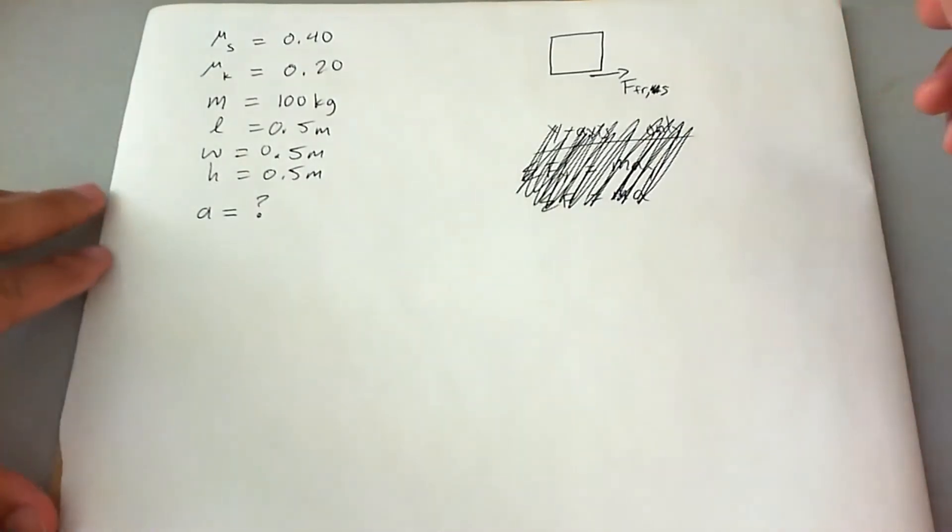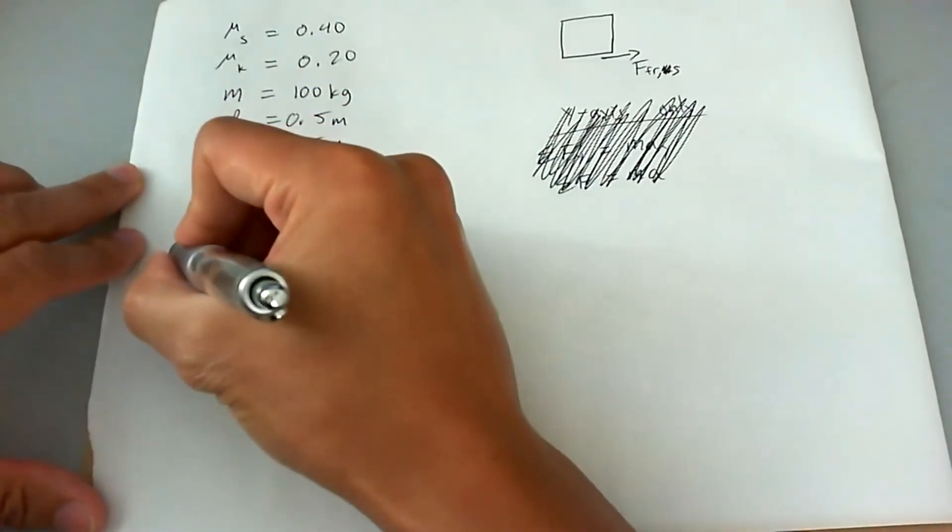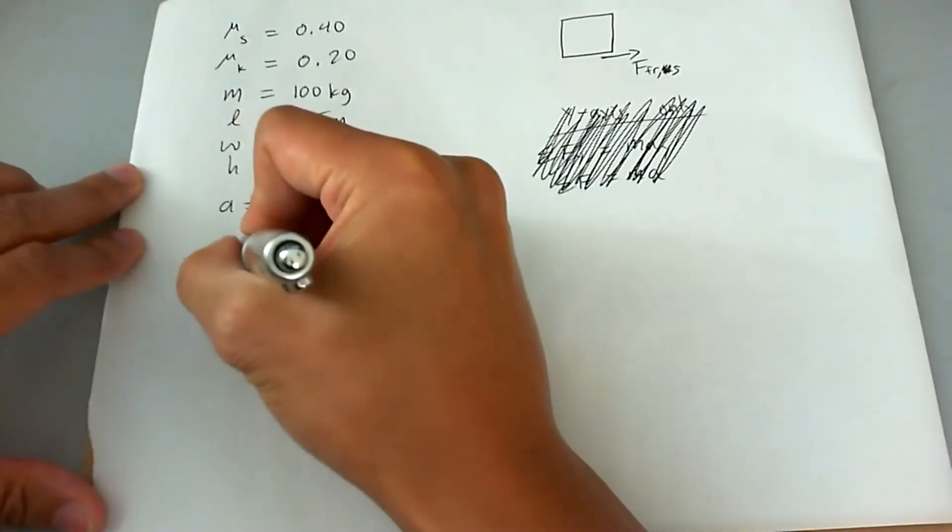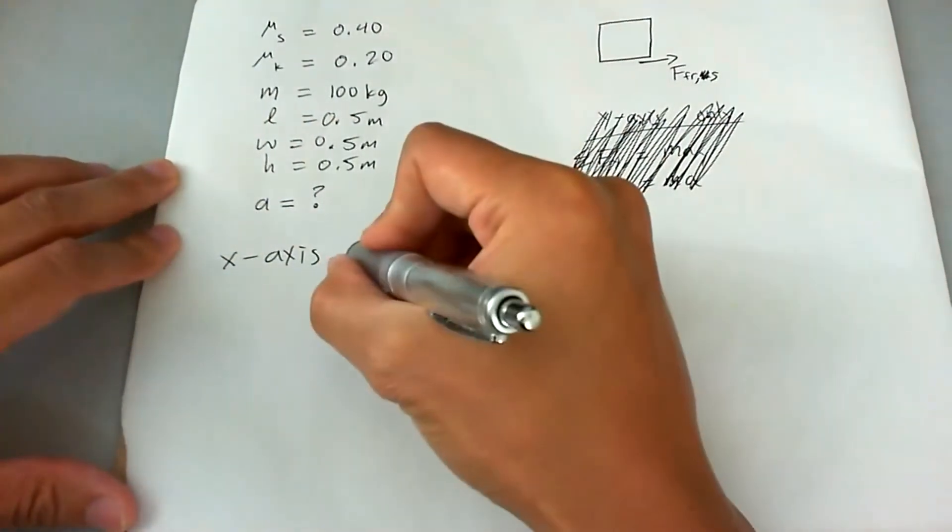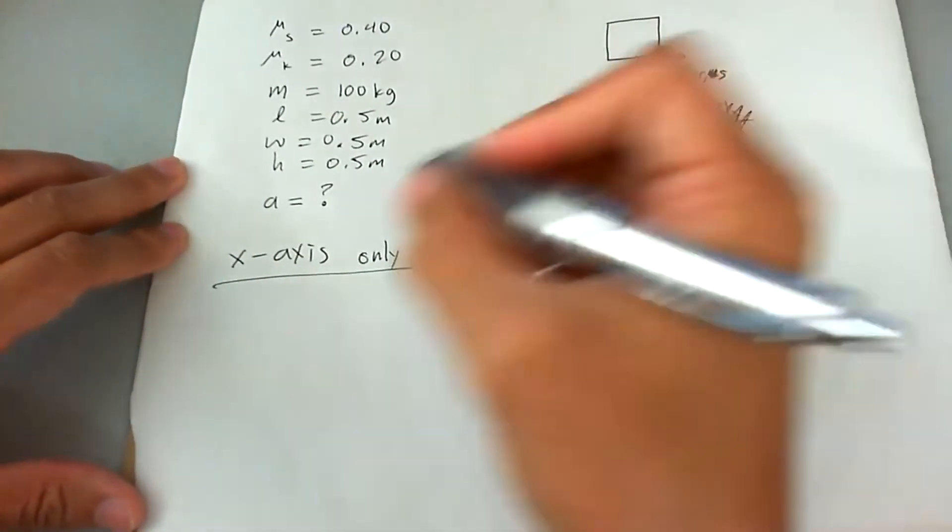Since we're only dealing with one dimension, we're going to look at the x-axis only, and we're not going to label any subscripts because we're going to look at only the x-axis anyways. So it's a one-dimensional problem.